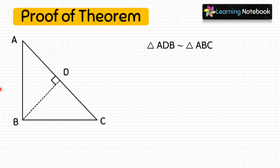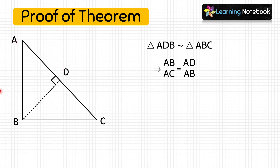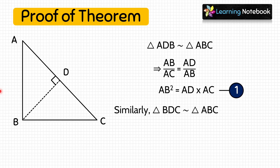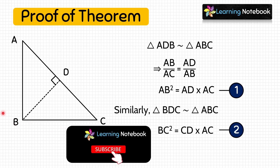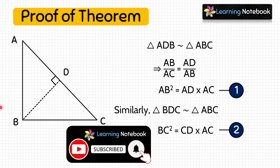Since two triangles are similar, their corresponding sides are proportional. So we can say AB/AC = AD/AB, or AB² = AD × AC — let's mark this as equation 1. In the same way, we can prove that triangle BDC is similar to triangle ABC, and thus BC² = CD × AC — let's mark this as equation 2.